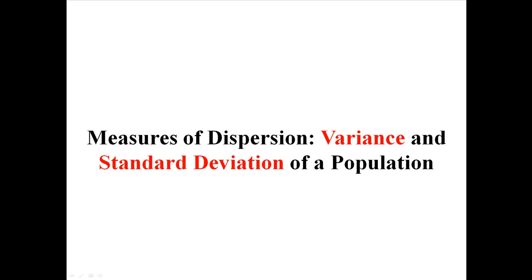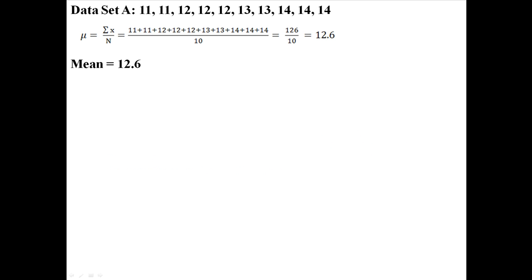So now we're starting with a very important topic. We're going to talk about variance and standard deviation of a population. Imagine you have a data set like this. All the numbers are pretty close together. When we find the mean by adding up all the values and dividing by how many we have, we find the mean to be 12.6.